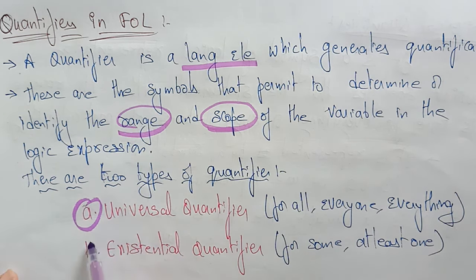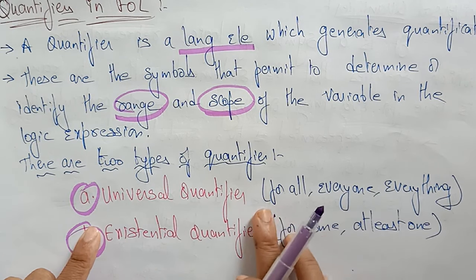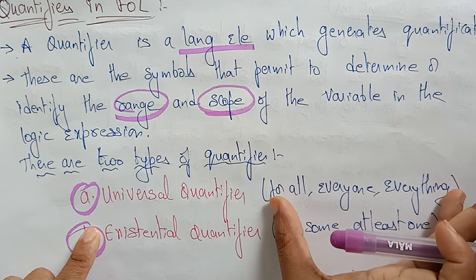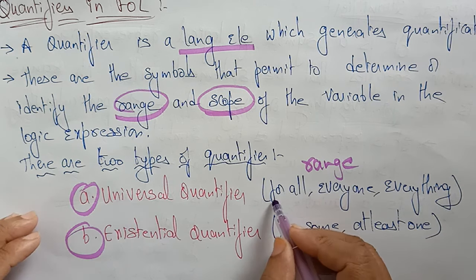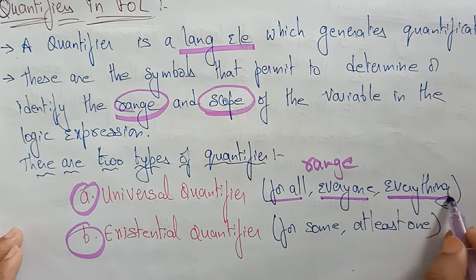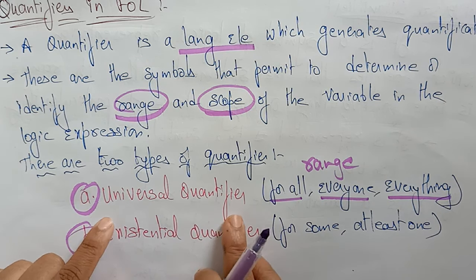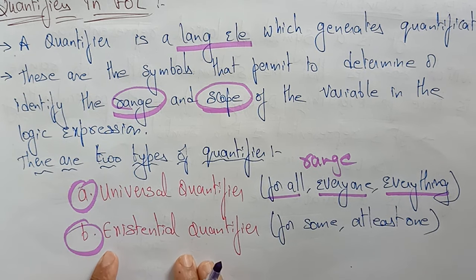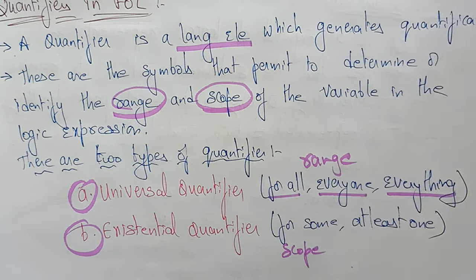Quantifiers are of two types: one is the universal quantifier and another is the existential quantifier. The universal quantifier deals with 'for all,' 'everyone,' 'everything' — it determines the range of a variable. The existential quantifier deals with 'for some' or 'at least one.'